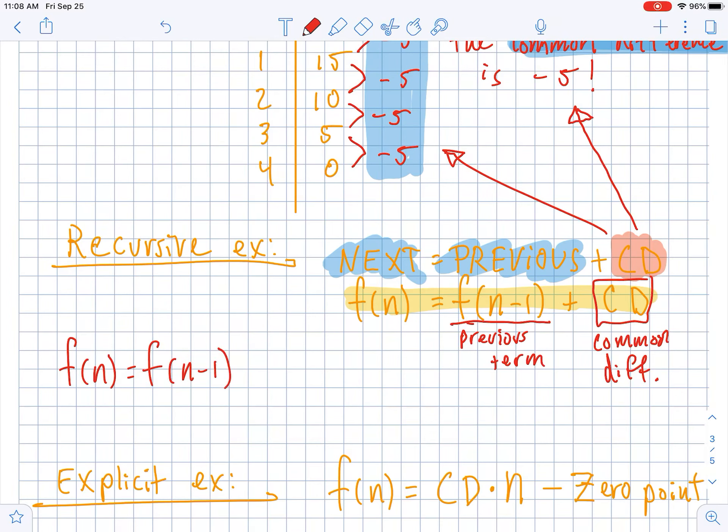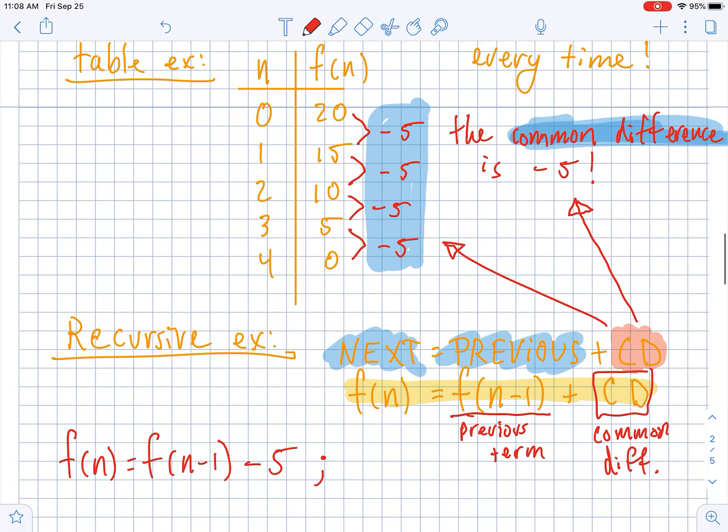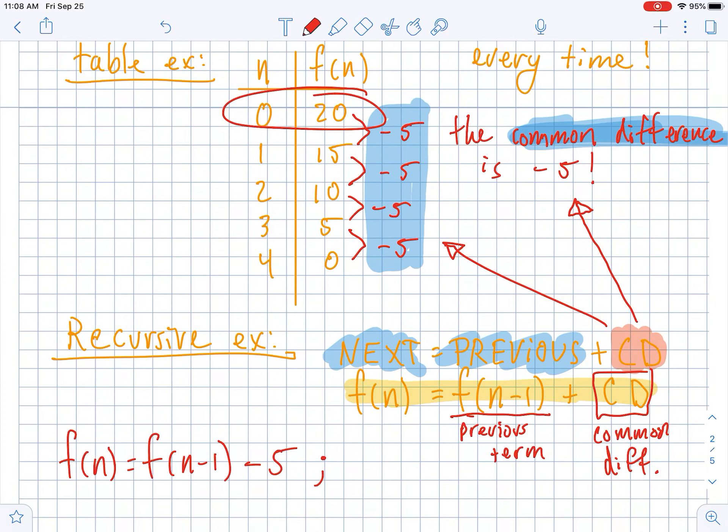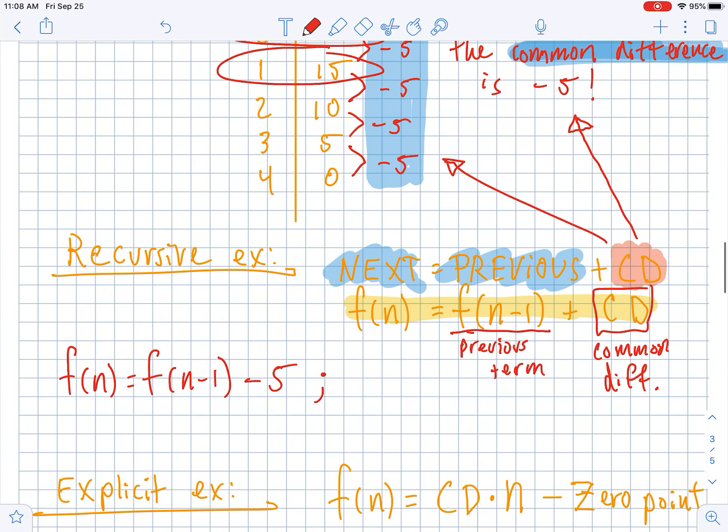So to create this one for this actual example of 20, 15, 10, 5, 0, it's just going to be every term, f of n is the previous term, f of n minus 1, but then minus 5. Now, that's most of the recursive definition, but to be proper, we should put a little semicolon and say what the very first term is. You could either say that f of 0 is 20, or you could say f of 1 is equal to 15. Let's say f of 1 is equal to 15. So this is the recursive definition for the example that we've been working with.